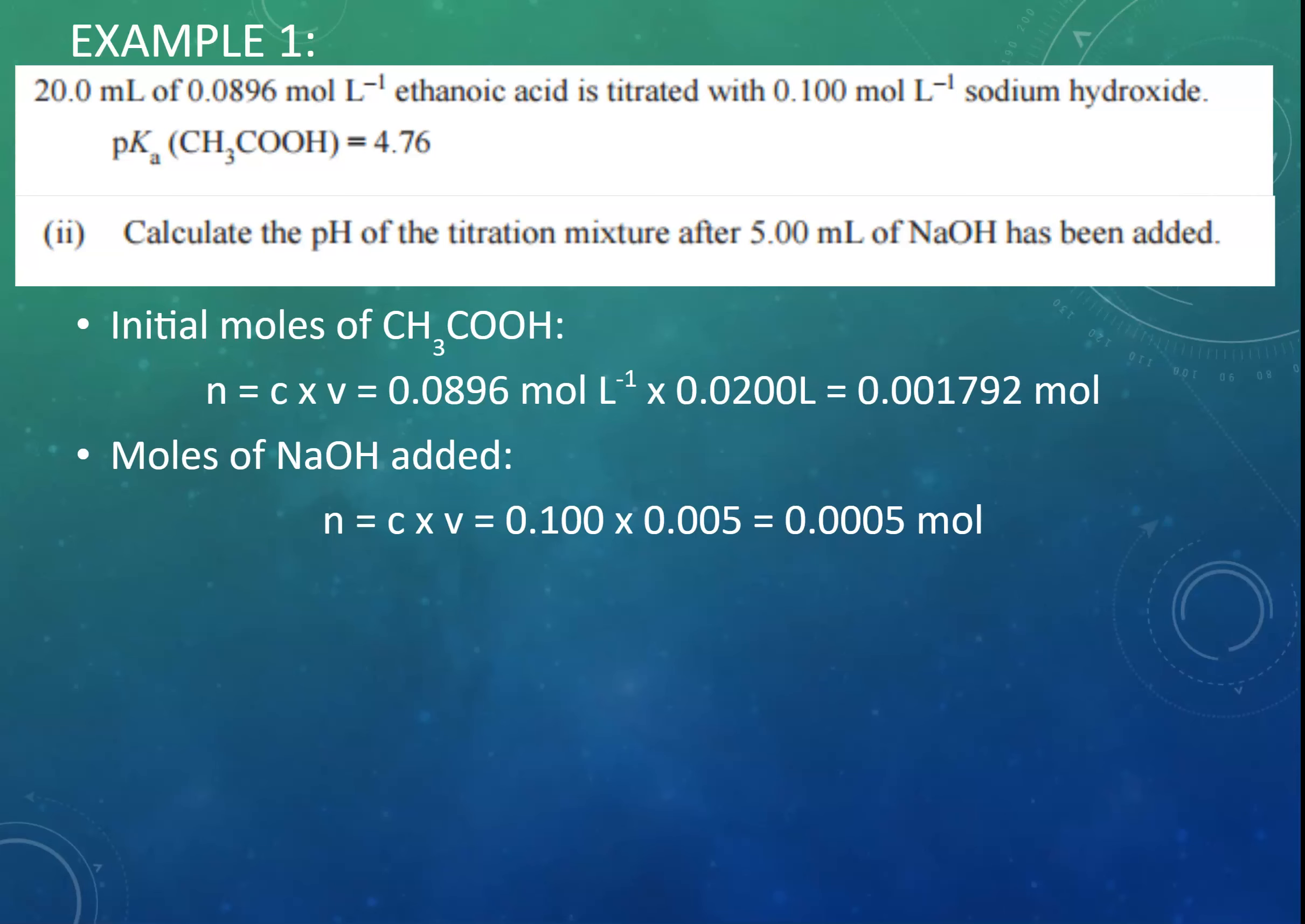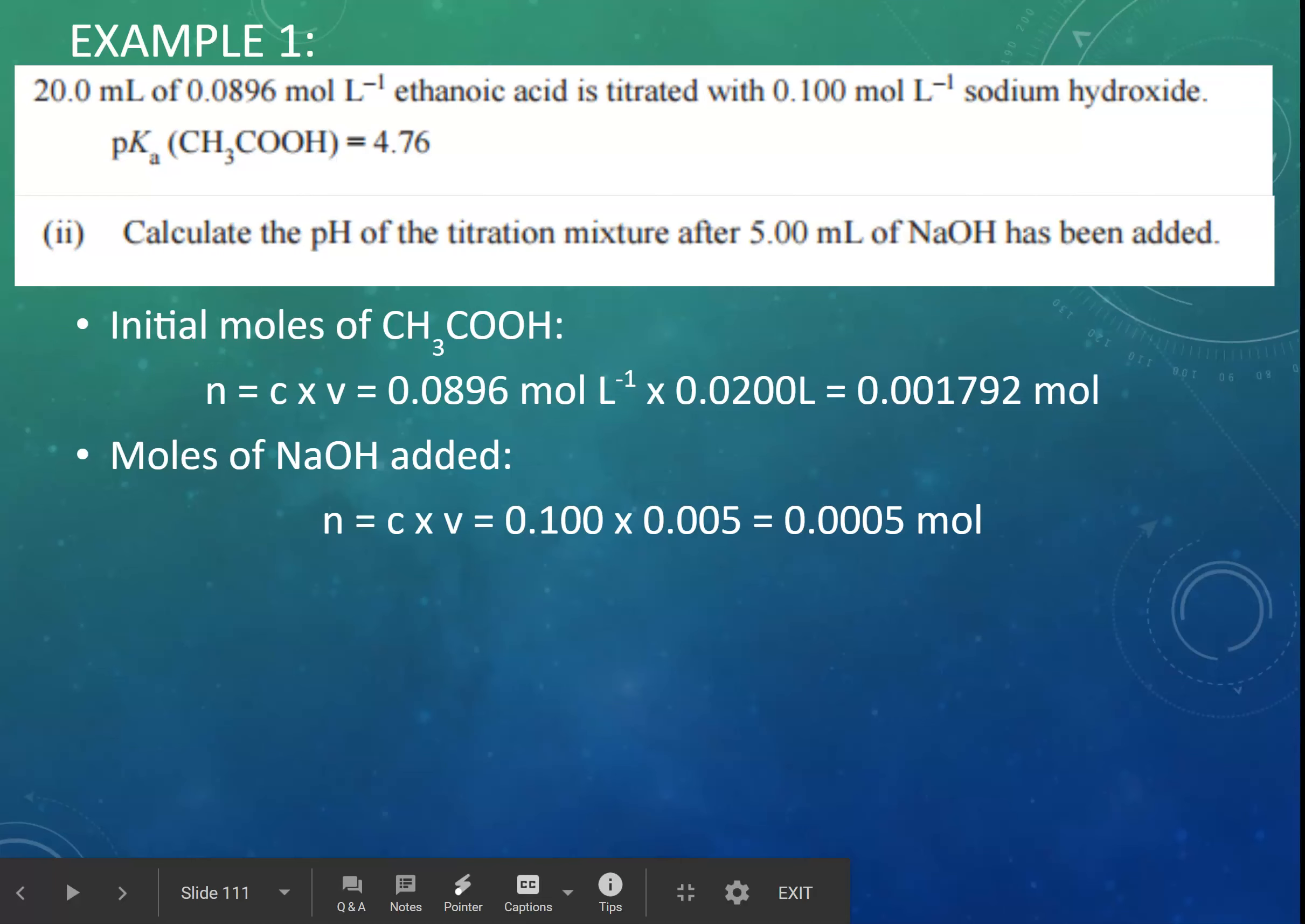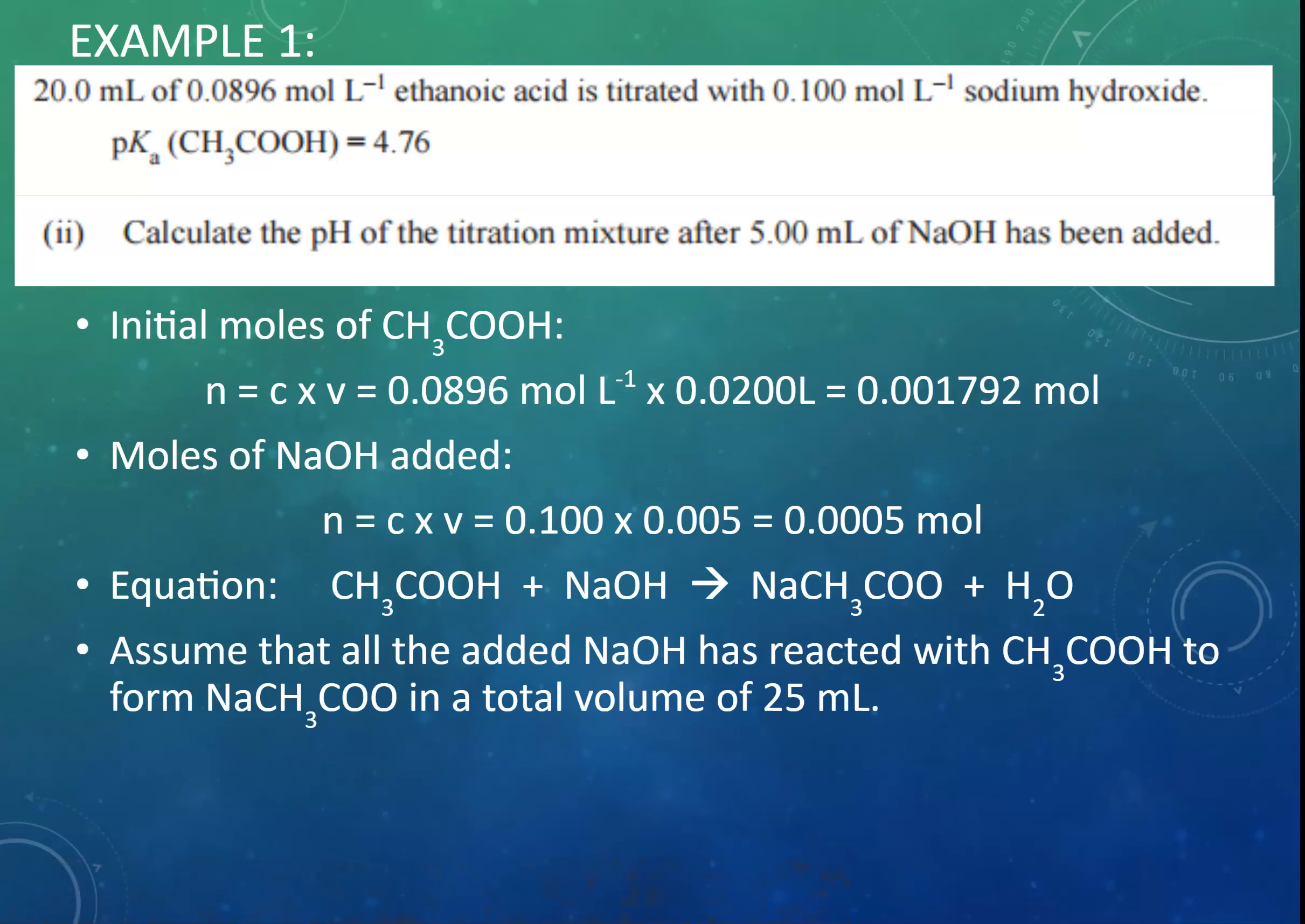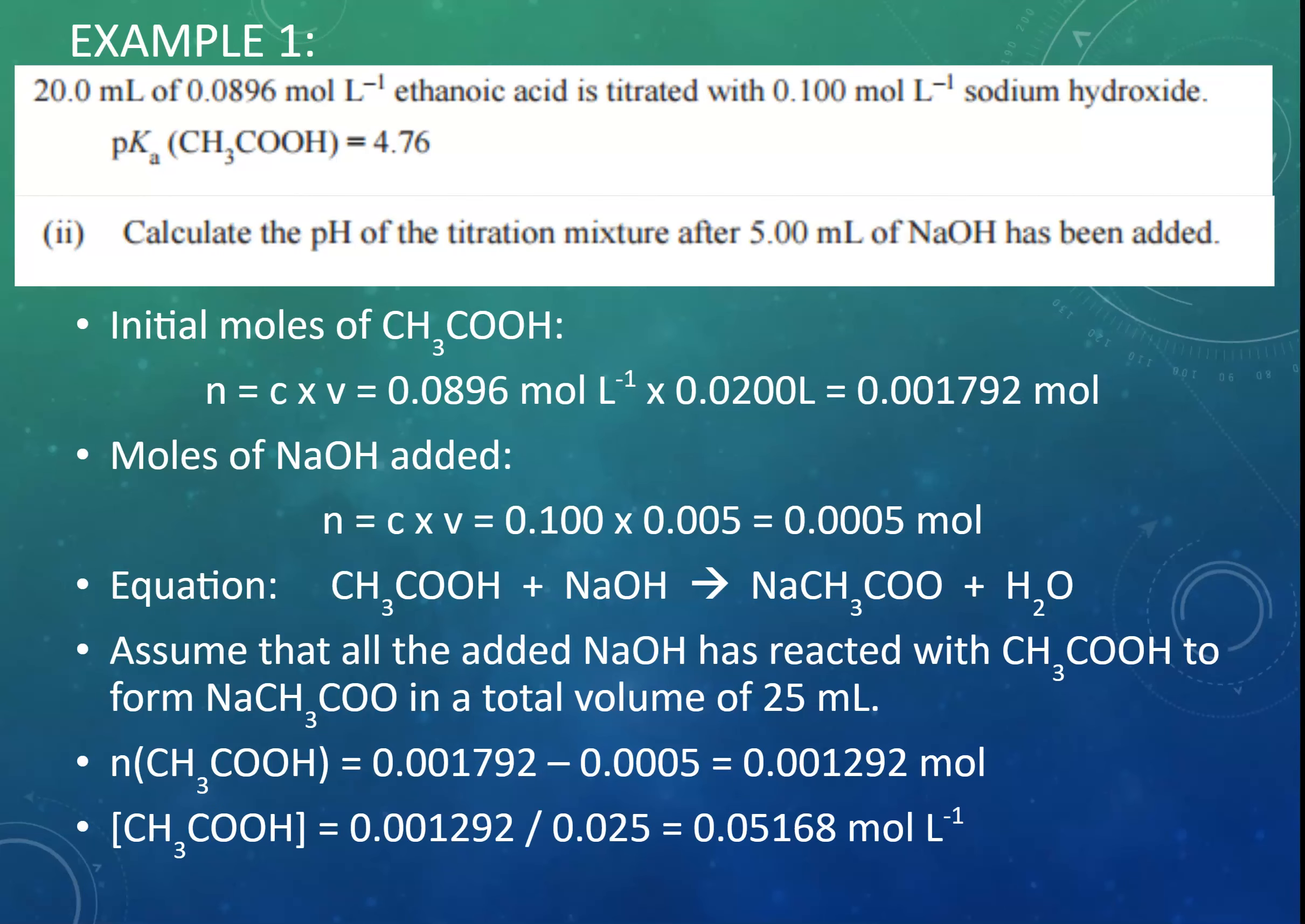So, we can work out, we've got our equation there. So, if we assume that all of the added sodium hydroxide has reacted with the ethanoic acid to form sodium ethanoate, we can assume that the moles of ethanoic acid that we have after 5 mL of sodium hydroxide has been added is that, and therefore the concentration is there using that volume of 25 mL.